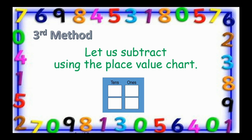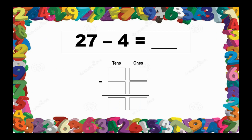This time, we will proceed to the third method. Let us subtract using the place value chart. Let's have 27 minus 4. We write 27 in the place value chart: the 7 in the 1s place, and the 2 in the 10s place. Since 4 is a 1-digit number, we write 4 in the 1s place. Subtract the 1s: 7 minus 4 equals 3. Then 2 minus 0 equals 2. So, 27 minus 4 equals 23.